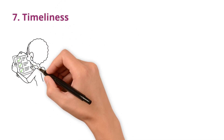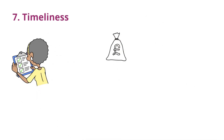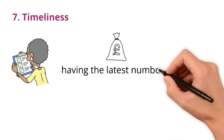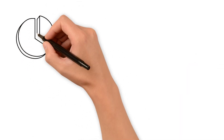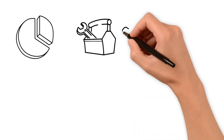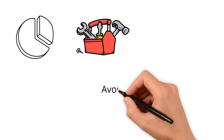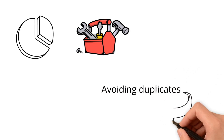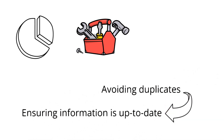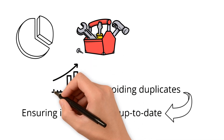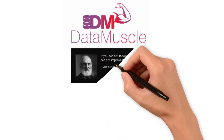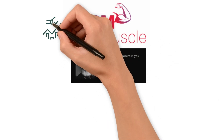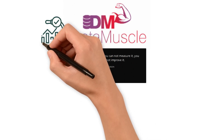Timeliness is about having up-to-date data when you need it. In finance, for instance, having the latest numbers is key to making the right decision. All in all, these dimensions are like a toolkit for keeping your data in top shape. From avoiding duplicates to ensuring information is up-to-date, each one helps make sure your data is reliable and ready to use. And remember, you can't improve what you can't measure. Hope you got the clarity on what the data quality dimensions are. See you in the next one.